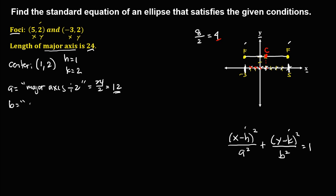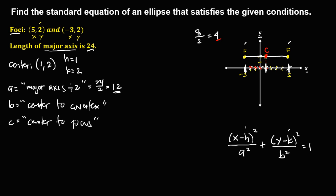To solve for b, we need the center to co-vertex distance, but since we don't have the co-vertex, we cannot solve for b directly. So we need to solve for c first. c is the distance from center to focus. From the graph, counting from center to focus: 1, 2, 3, 4. So c is equal to 4.